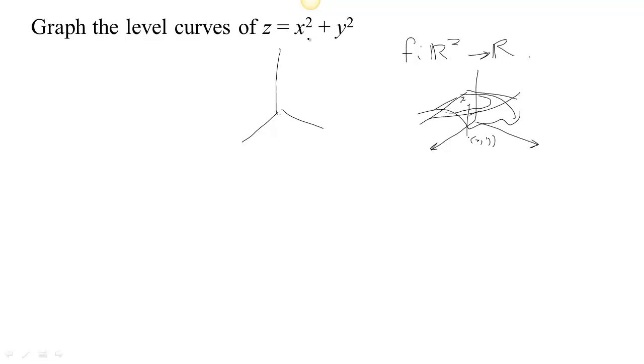It's an elliptic paraboloid, right? Because if we freeze x, we have z equals y squared plus a constant, which is a parabola. If we freeze y, we have z equals x squared plus a constant. That's a parabola. If we freeze z, then we have ellipses. So it's an elliptic paraboloid.